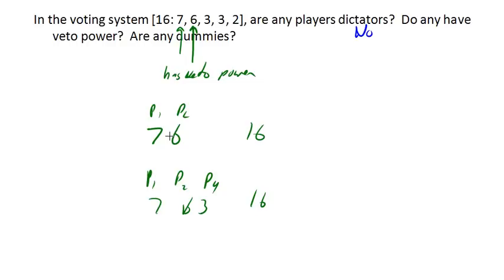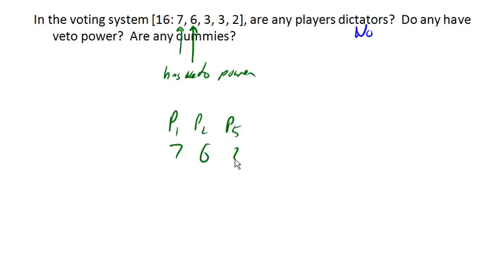Now, if instead, we were to imagine player 1, player 2, and player 5 sitting around, they only add up to 15, which does not reach quota. And so they're not winning at that point. So player 5's not important there, because it's not even a winning coalition.